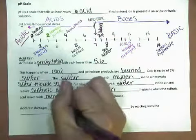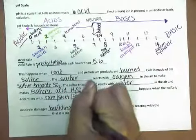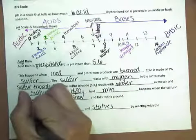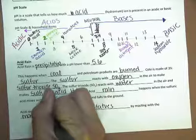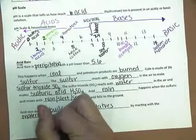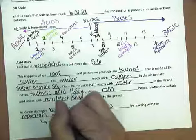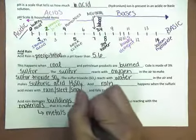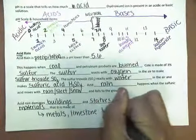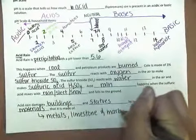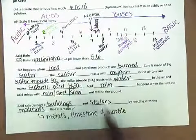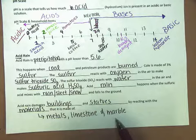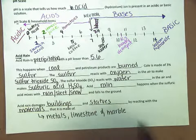Acid rain damages buildings and statues by reacting with the materials that they're made of. Some examples of materials that those buildings are made of are metals, limestone, and marble. When acid rain falls on any of these, it deteriorates them, corrodes them, and takes away the metal, limestone, and marble.